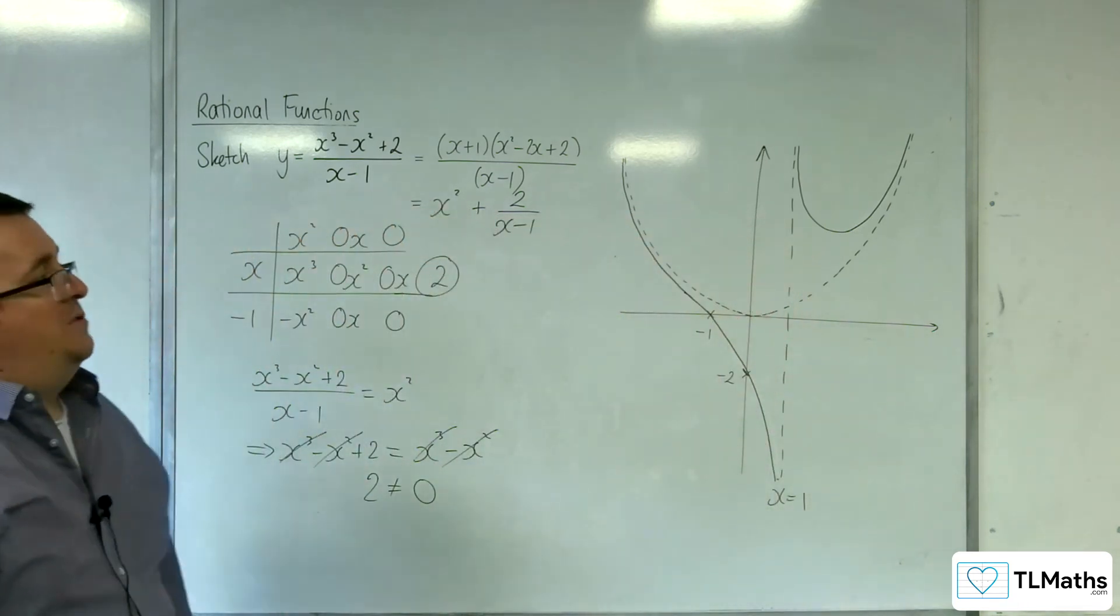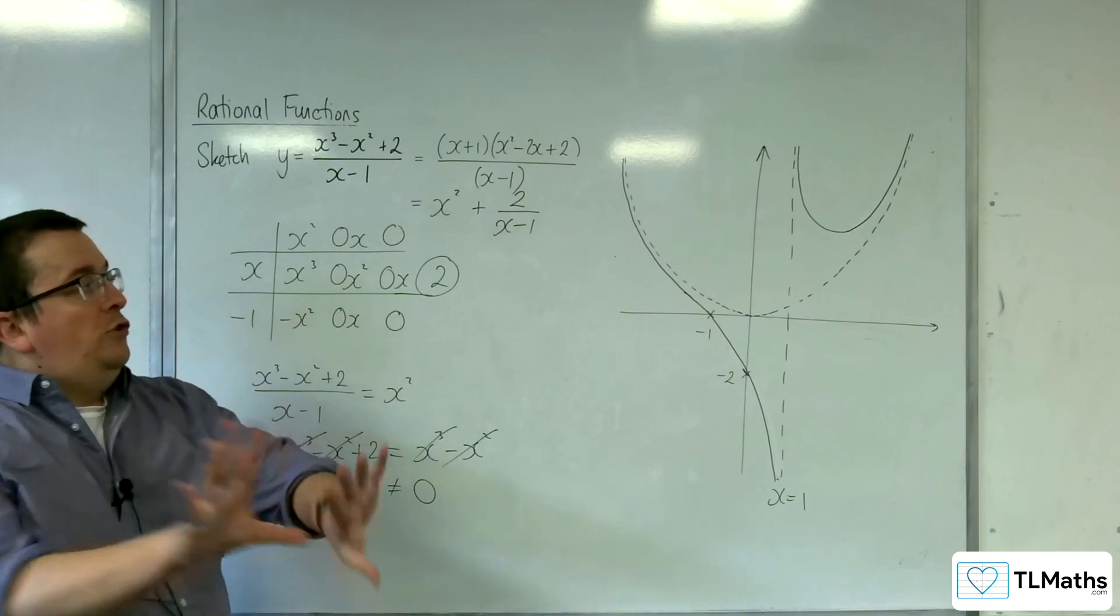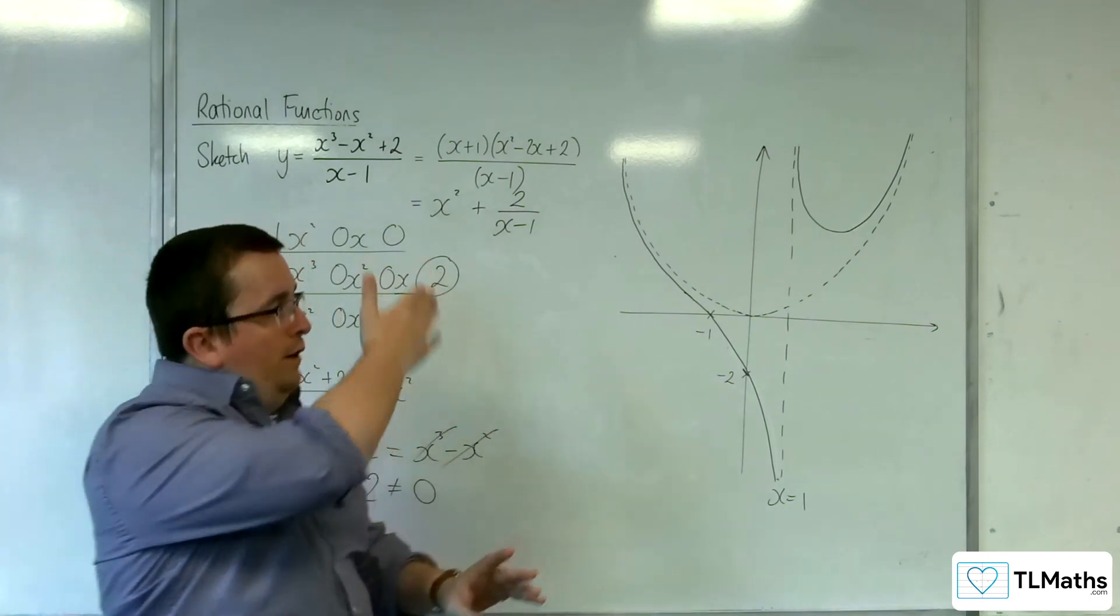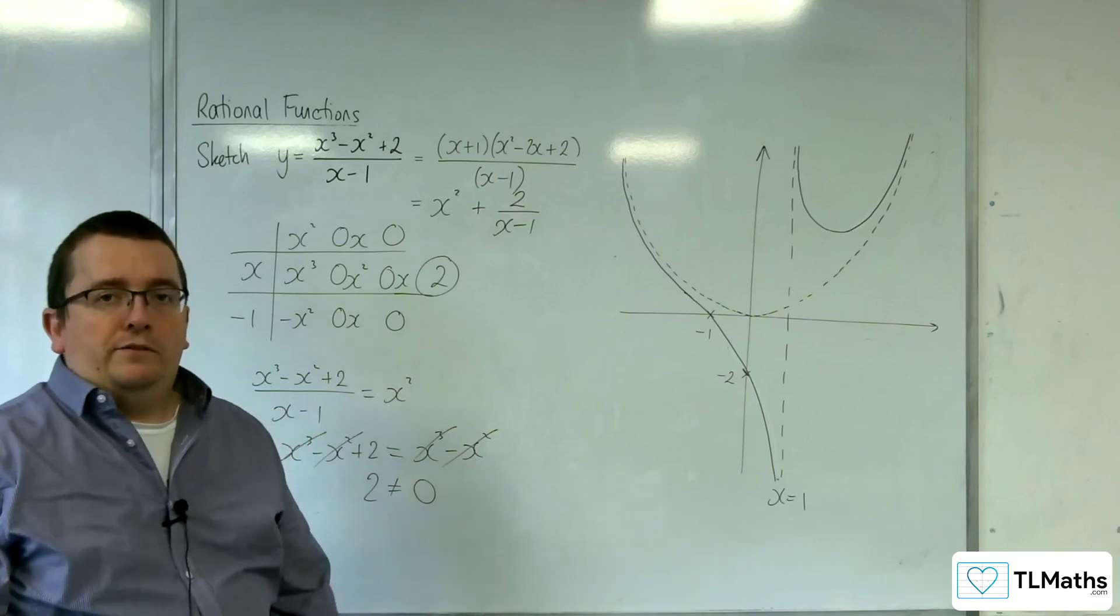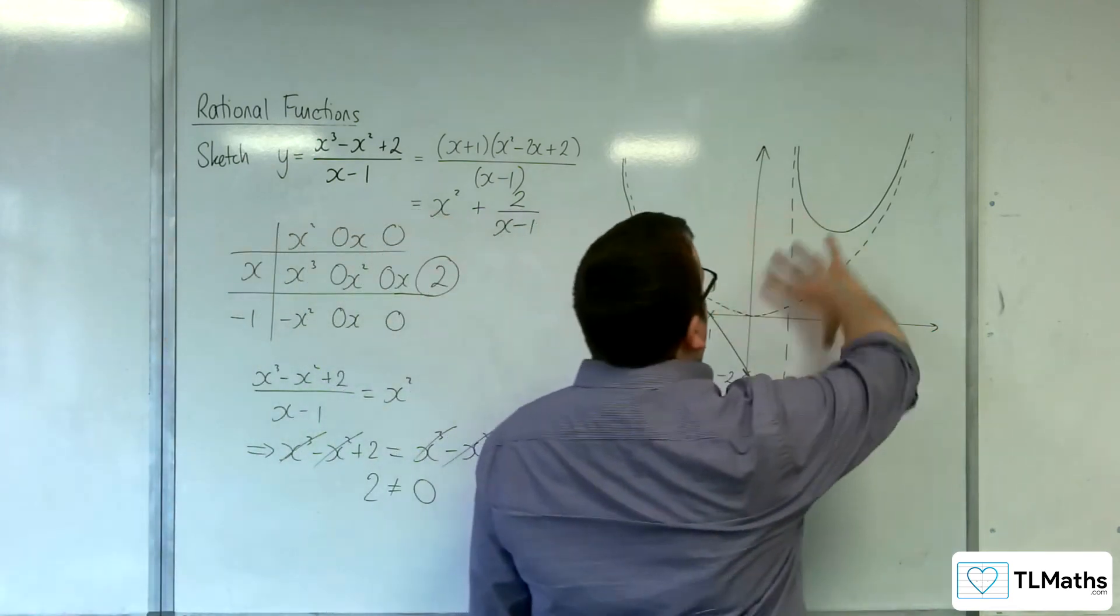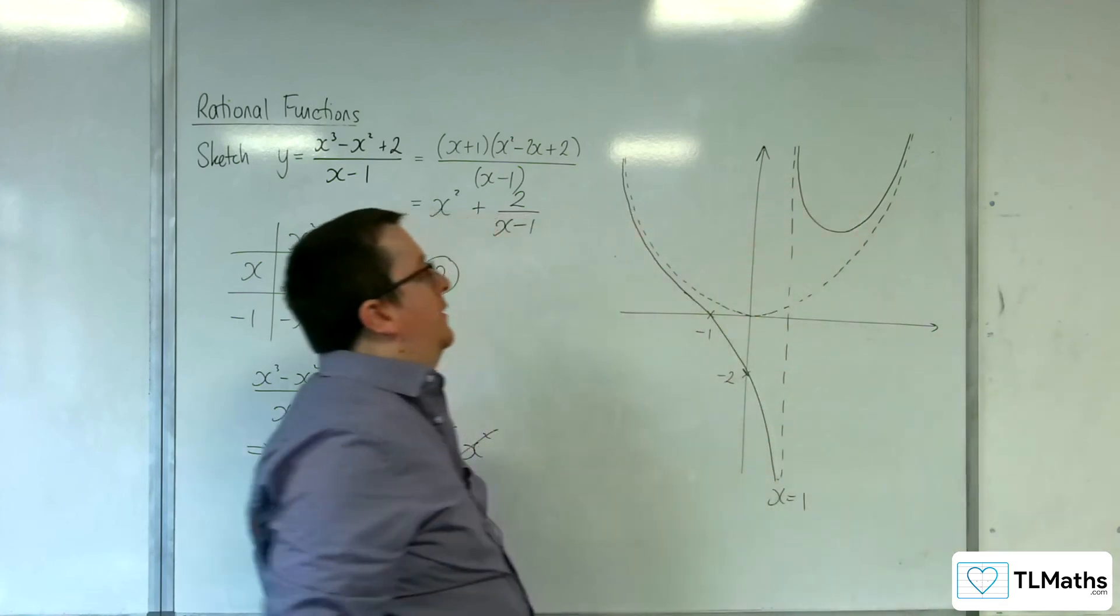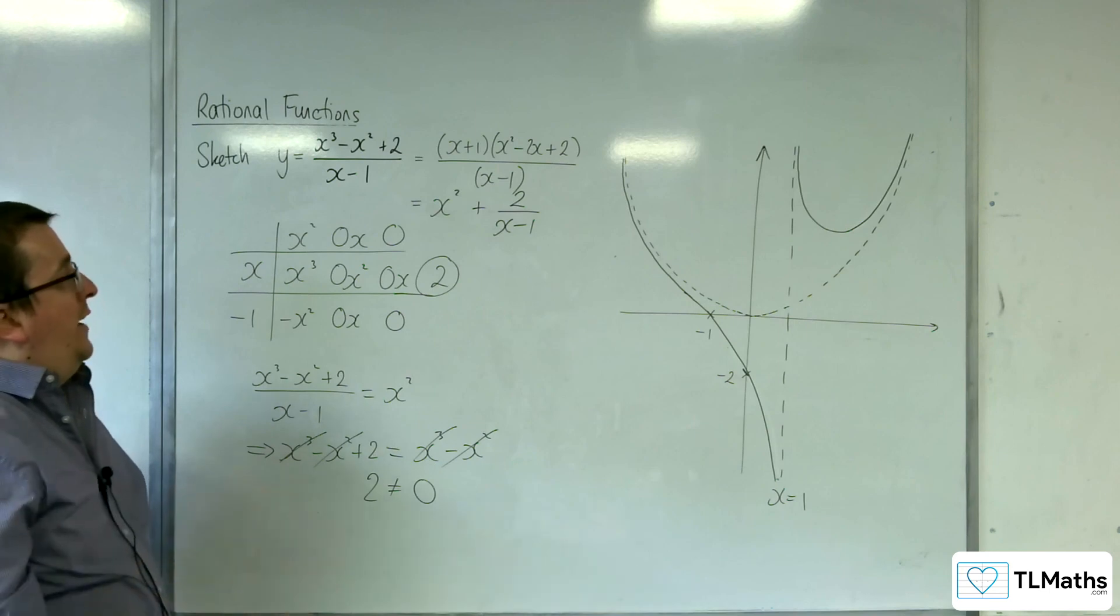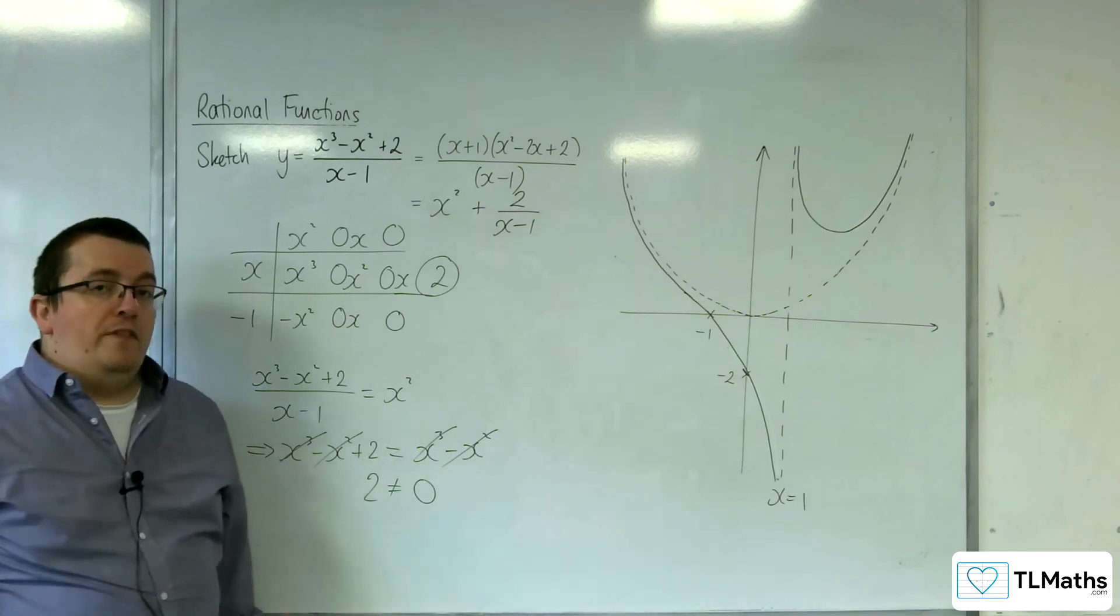And so, this is what the curve must look like. It's got a curved asymptote. So, if you zoom out, so if you put this into Desmos and you zoomed out, it would look like the y equals x squared curve. But all of the interesting stuff is happening close to the y-axis here. So, that is how we can sketch a curve of this form.